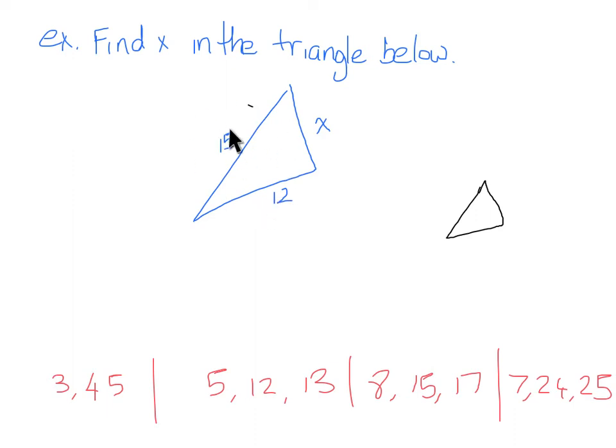Well 3 can go into 12, 3 can go into 15, so if I divided both things by 3 I would get on the bottom I would get 4 and I would get, divide by 3, I would get here that this is 5.